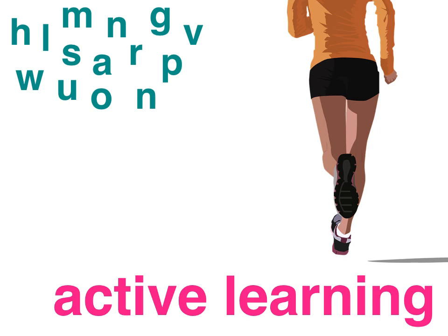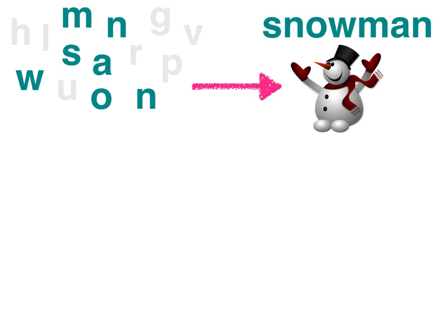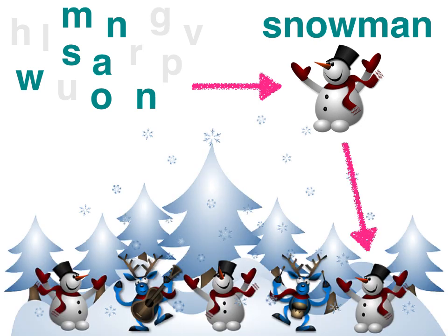The third assumption is that humans engage in active learning by attending to relevant information, organizing selected information into a coherent mental representation, and integrating that mental representation with other knowledge.